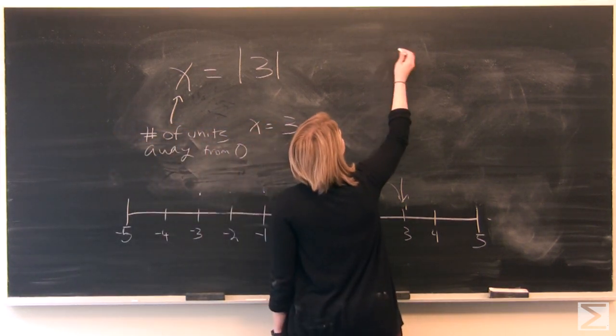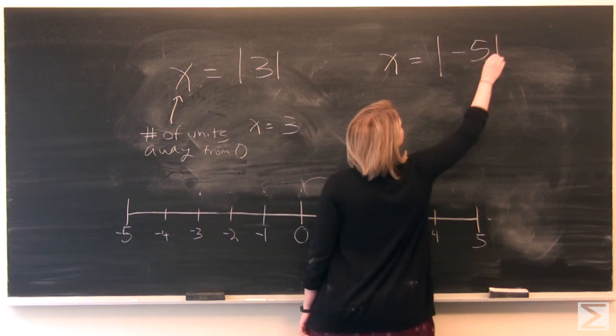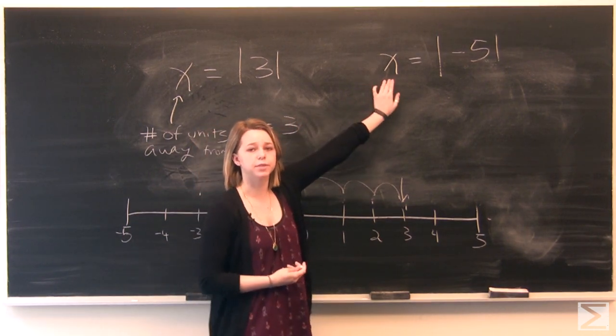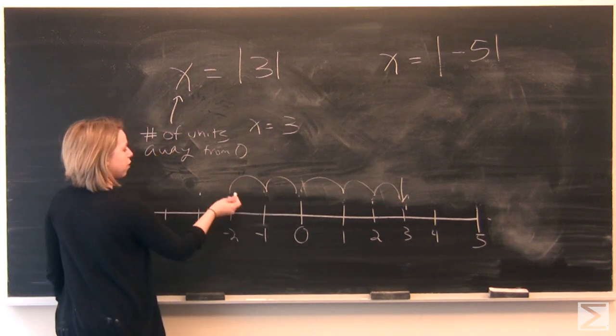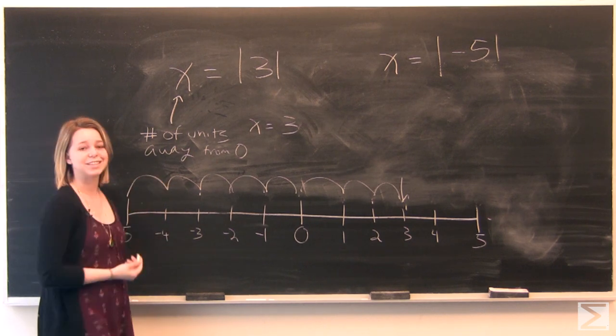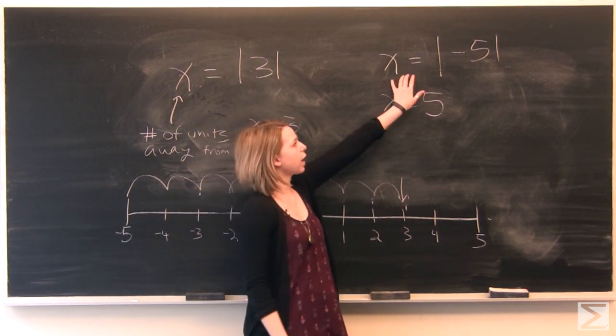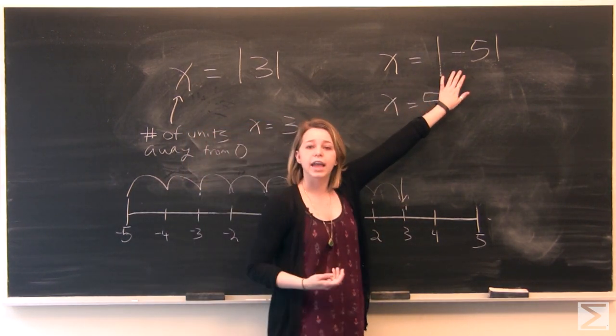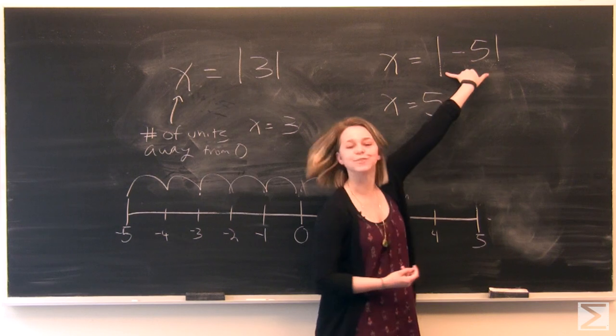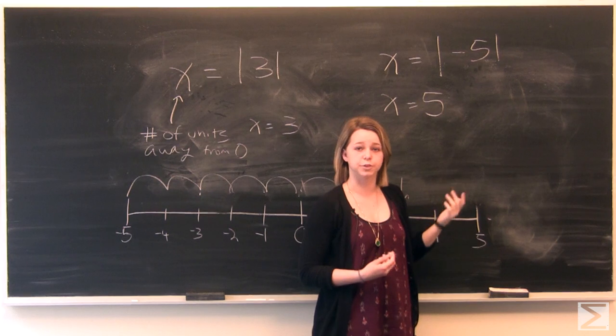But we could also have something like x equals the absolute value of negative 5. In this case, we're still going to be identifying the number of units away from 0. If we count our units backwards to negative 5, we'll see that we have exactly 5 units from 0. You'll find that if you have a negative unit in your absolute value markers, you're just going to be identifying the positive version of that number.